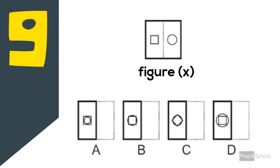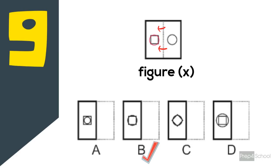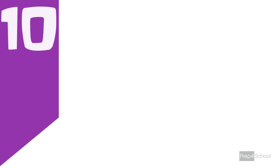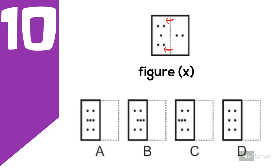Ninth problem: first identify the folding direction. In all options the dotted line is on the right side, so the folding direction is to the left side. Both the circle and square have the same dimensions, and the mirror image of a circle is also a circle with no changes, so the circle will come over the square. The answer is option B. In option A the circle is inside the square, which can never happen as both are the same dimension. In option C the square remains in its original position, which is not possible. In option D the square is inside the circle, also impossible. Hence the correct answer is option B.